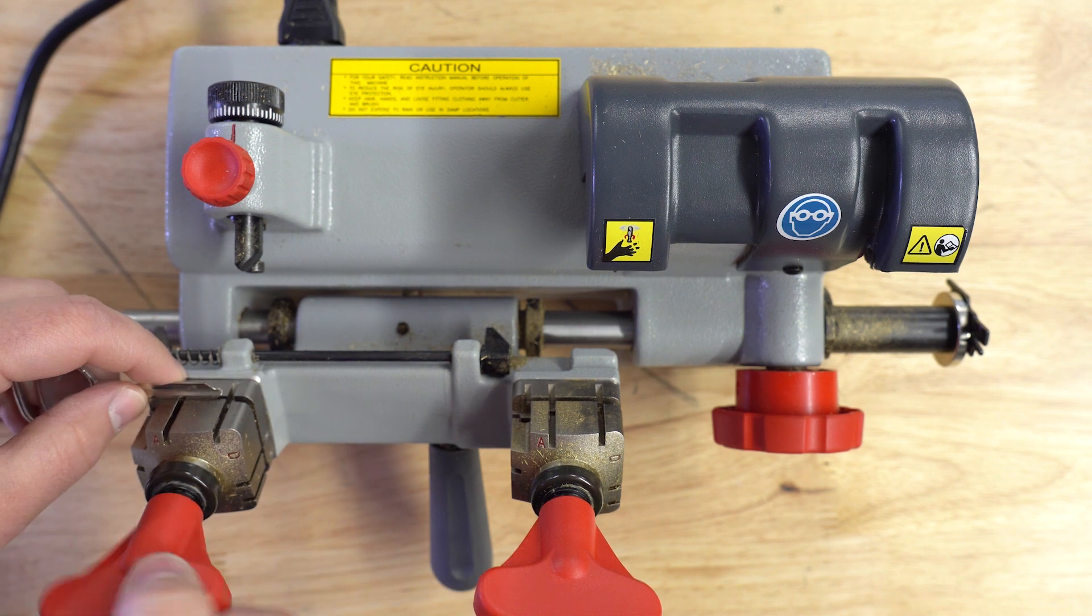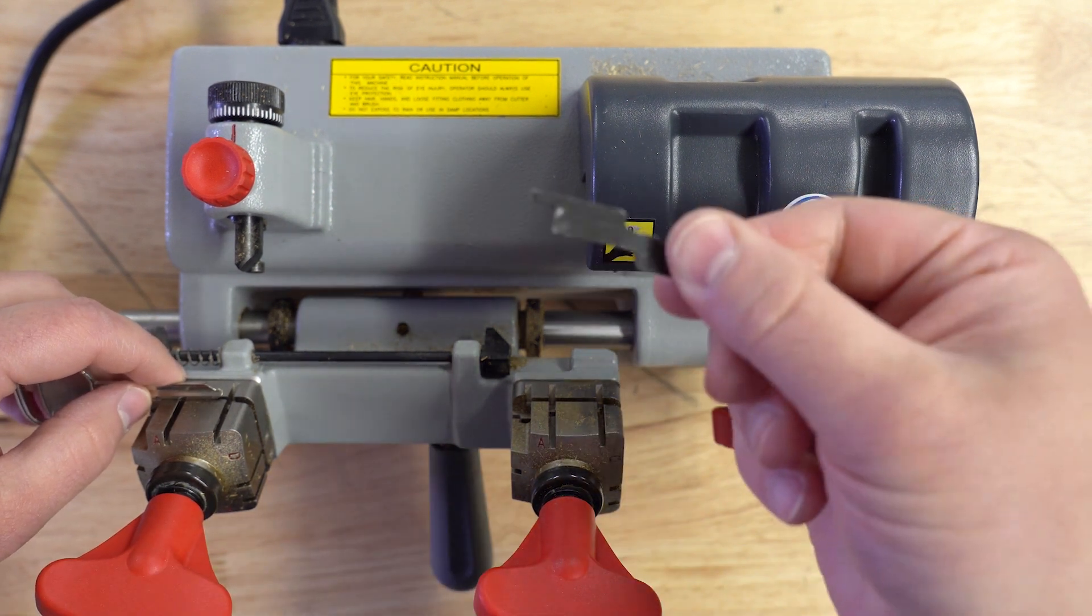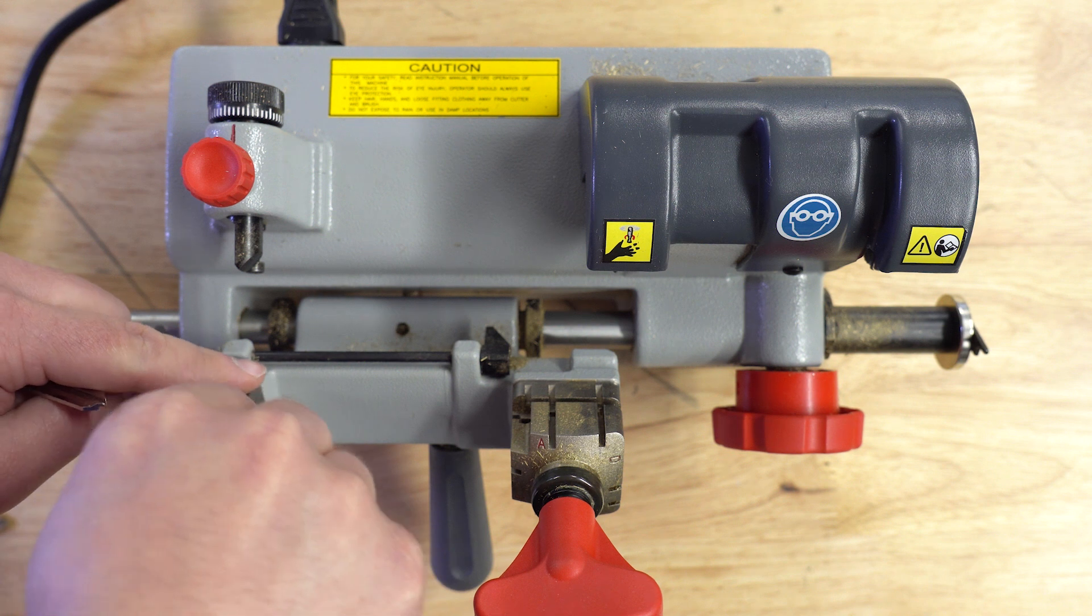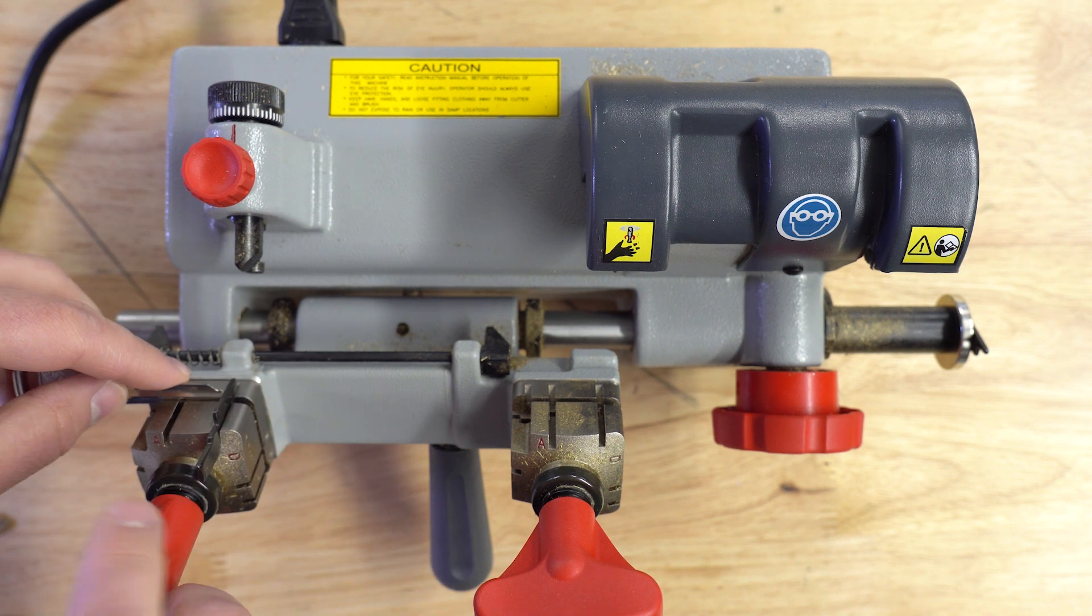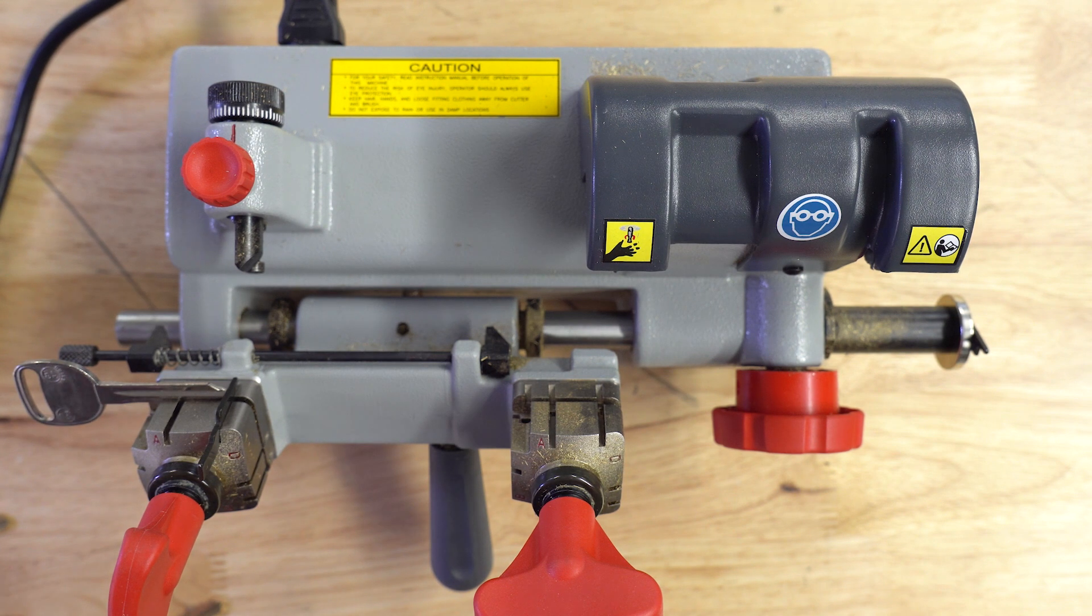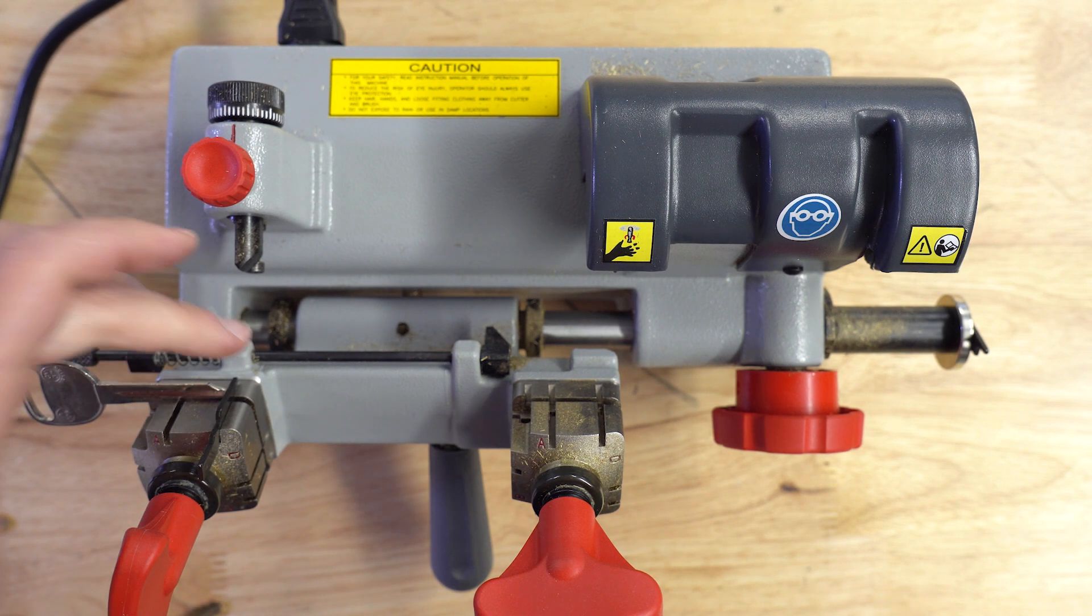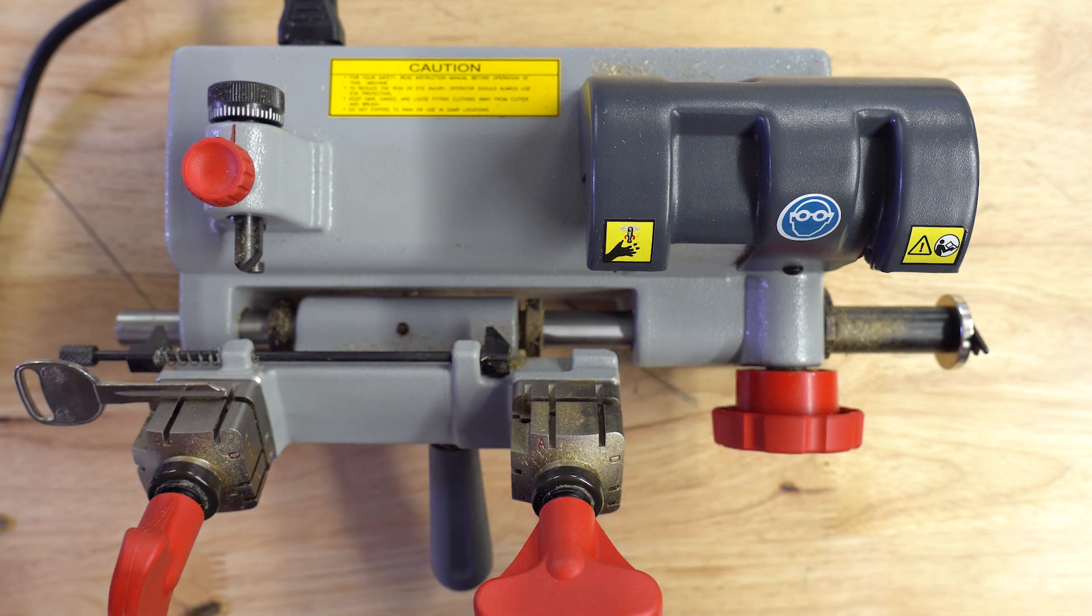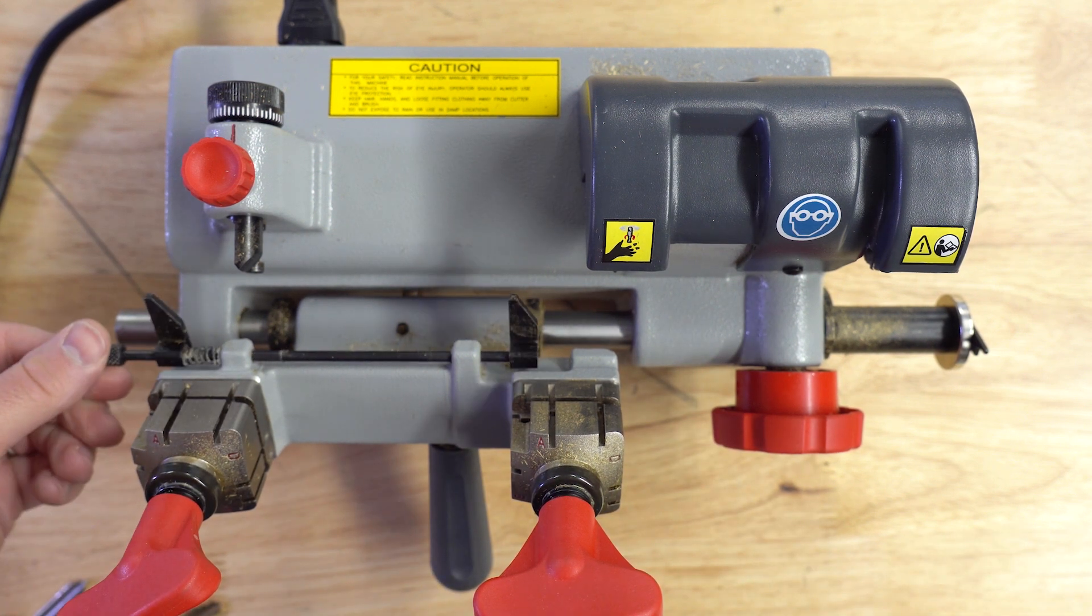What happens with these is you take one of these and stick it in like that, and then you would put your key in and align it just like that. So that's the two different ways, whether it's a tip stop, you'll use these little bars. Otherwise, you'll use this flip-up shoulder gauge right here.